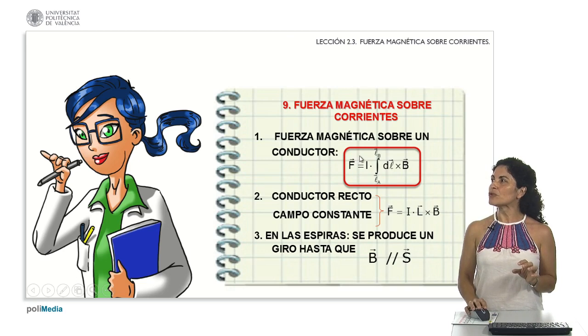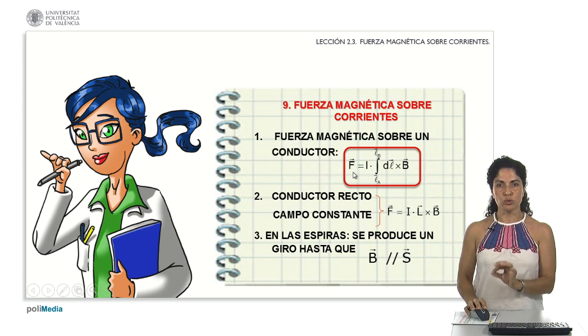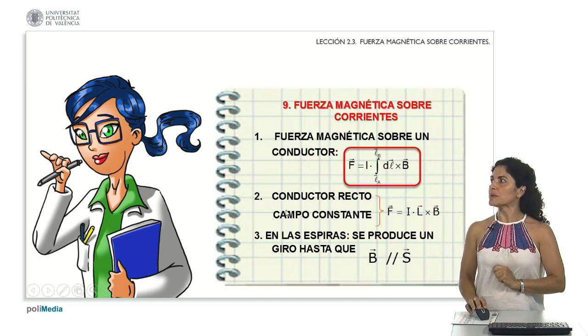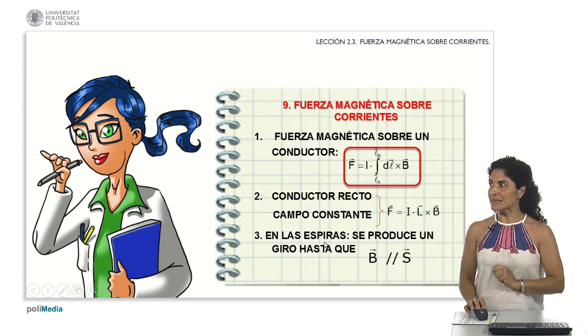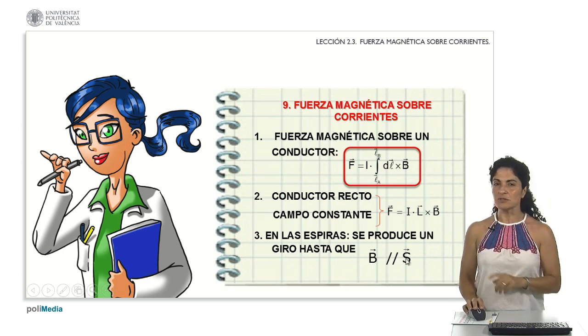In summary, we now have a method to calculate the total force acting on conductors through which a current is flowing, not just a charge. When dealing with a straight conductor and a constant field, this expression simplifies notably. Furthermore, when working with coils, a significant observation emerges. These coils will rotate until the parallel alignment of the magnetic field vector and the surface vector occurs. Thank you very much.